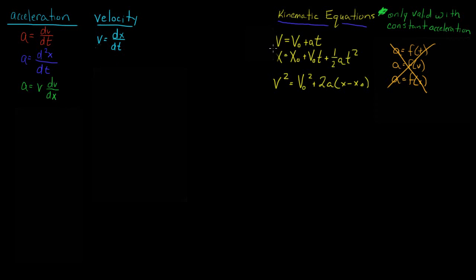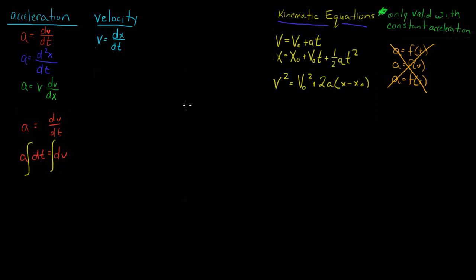Let's get started deriving these three equations. We're going to derive the first equation using the definition that acceleration equals the derivative of velocity with respect to time: a = dv/dt. We separate variables — moving dt to the other side gives a·dt = dv — and then we integrate both sides. Since acceleration is constant, a can be taken outside the integral.